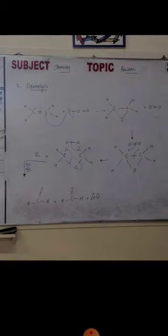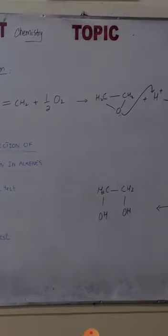We discussed ozonolysis: when we have any alkene and attack it with ozone, the oxygen attacks with its free radical on the carbon, and bond shifts to the other carbon. As a result, a triangular structure is formed — the ozonide. After rearrangement and addition of zinc, two molecules are produced: formaldehyde plus zinc oxide. We also looked at epoxidation: when you attack alkenes with an oxidizing agent, a compound called epoxide is formed. If the epoxide is further reacted with water, the product formed is a glycol.